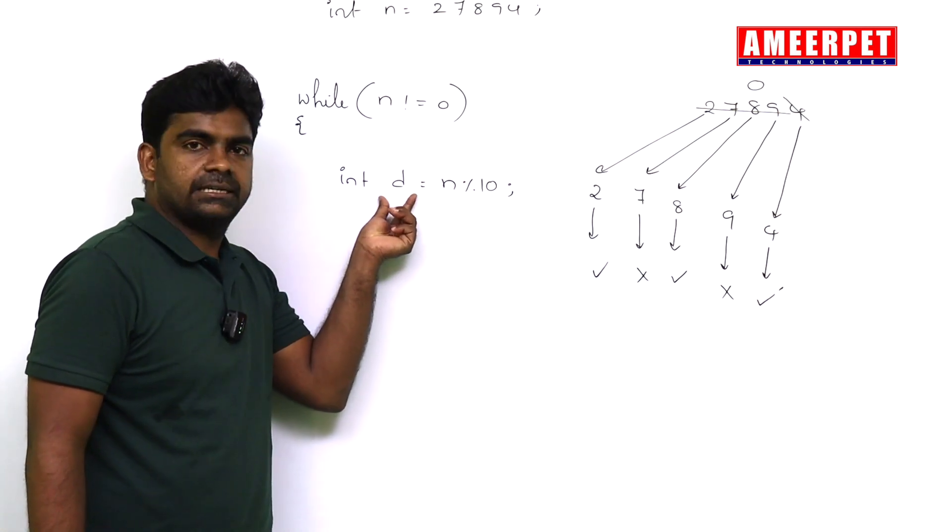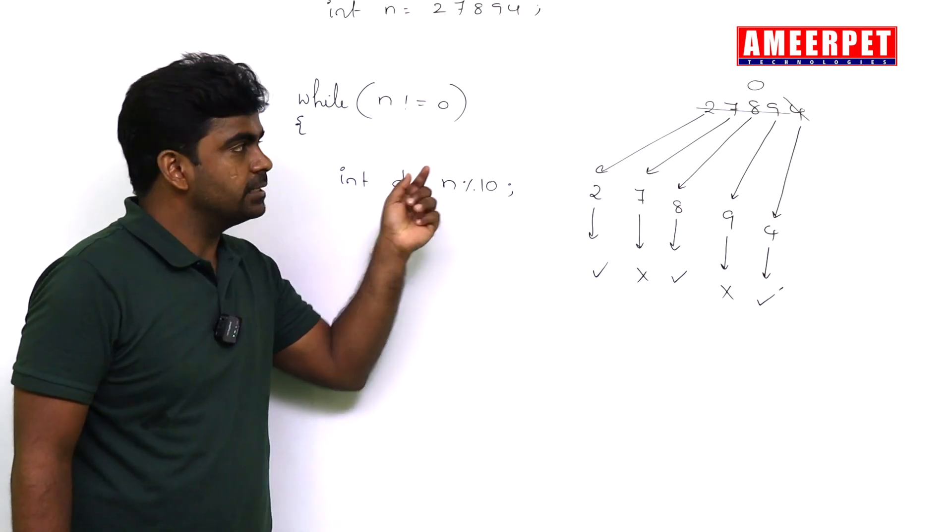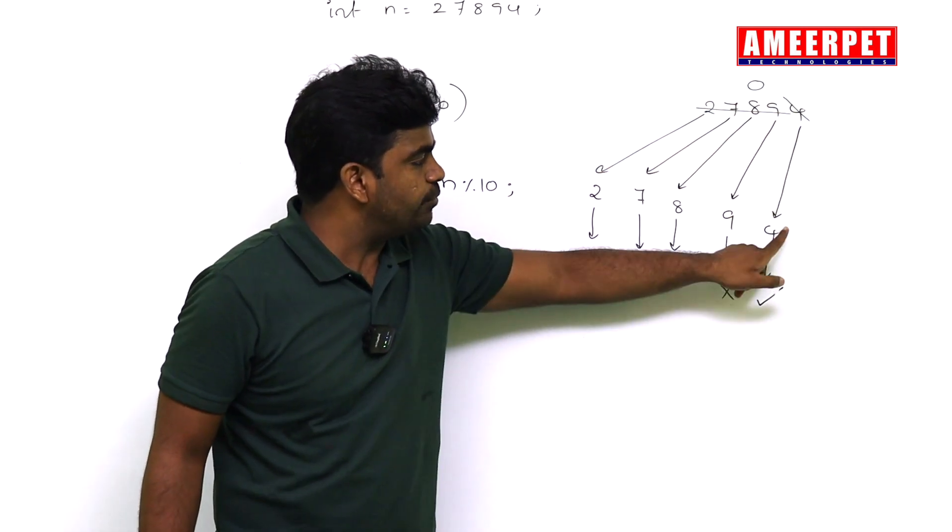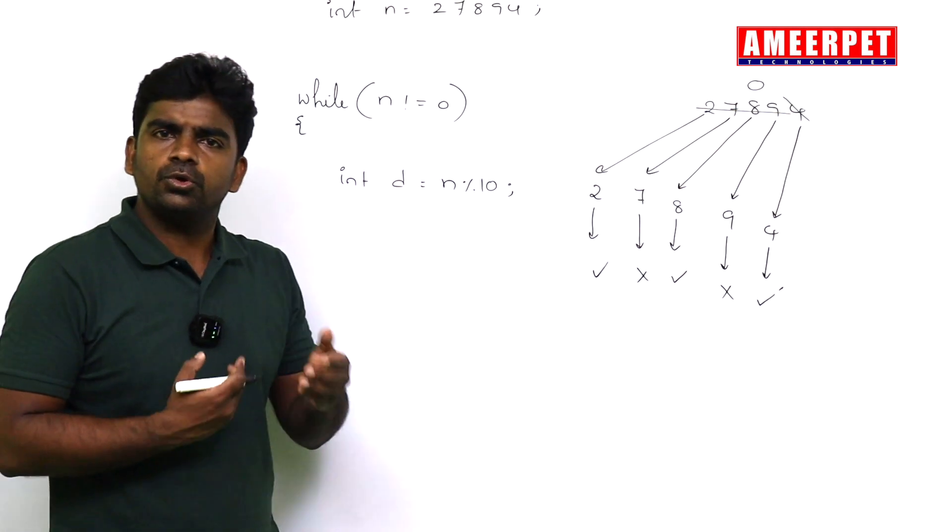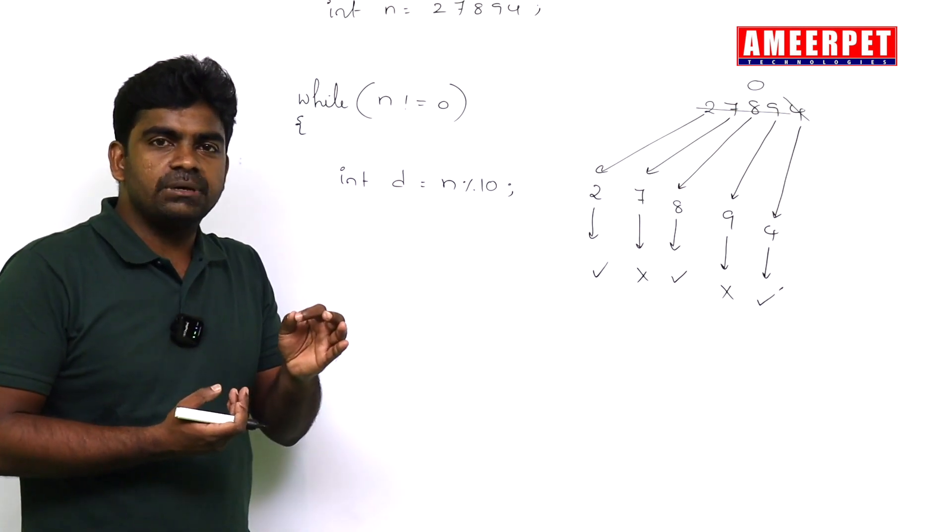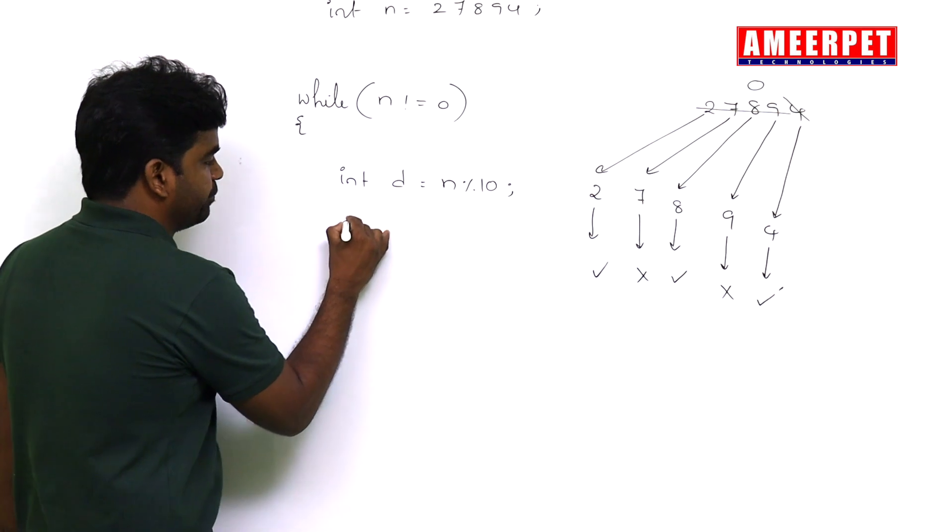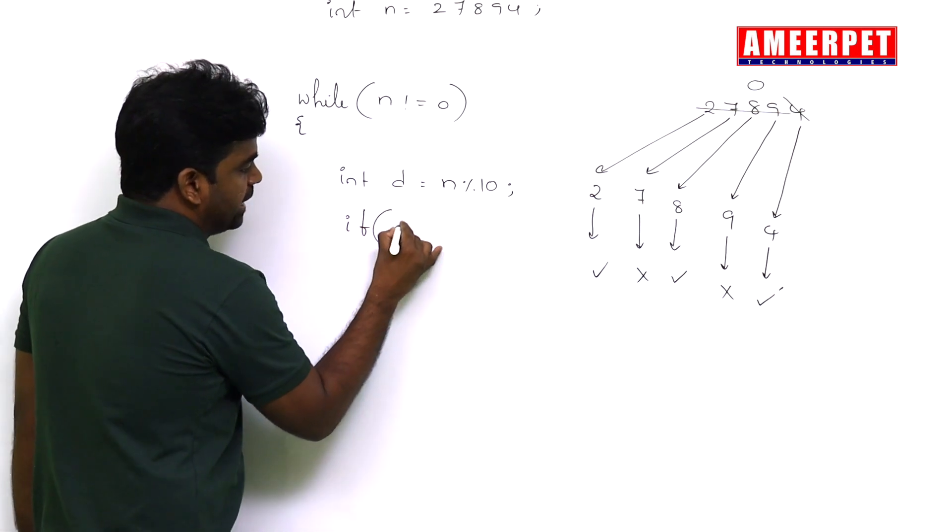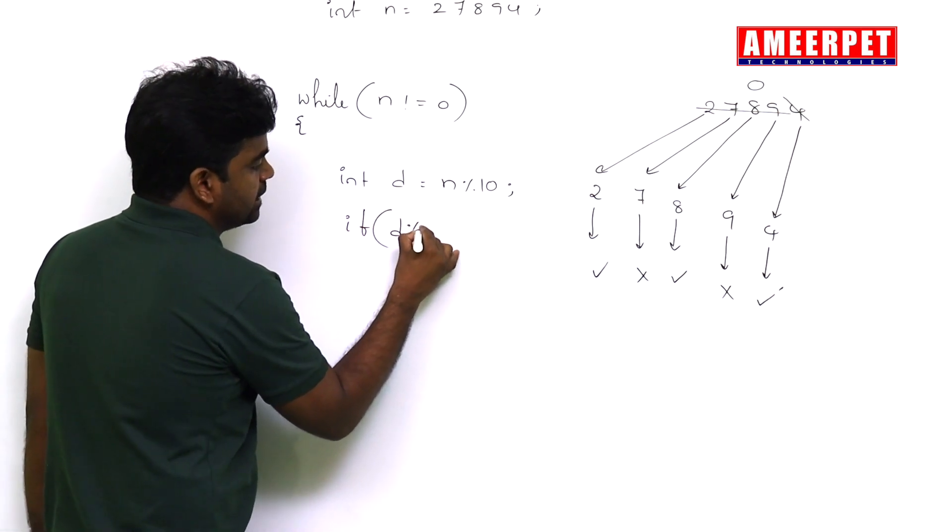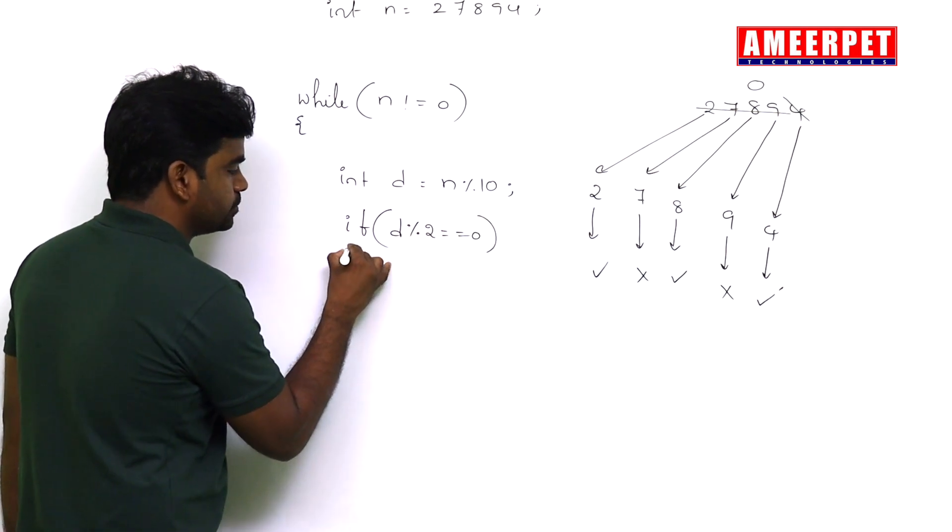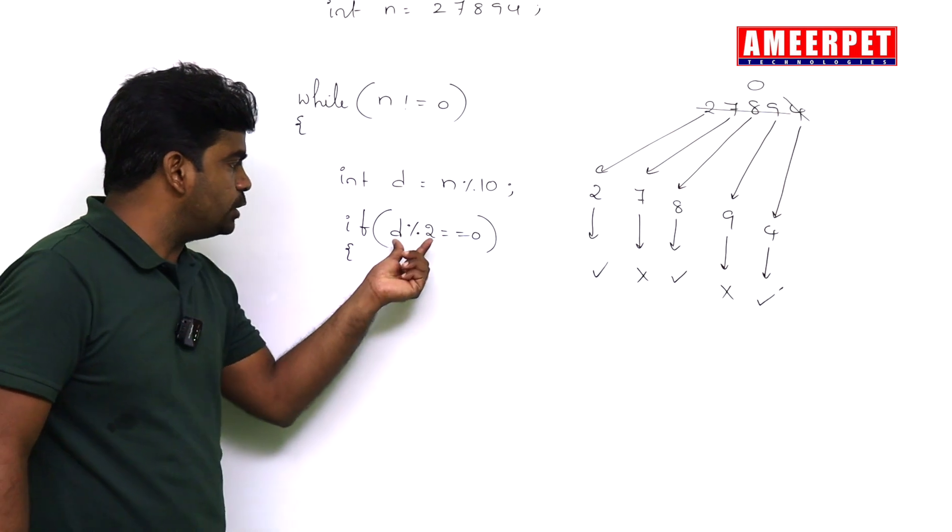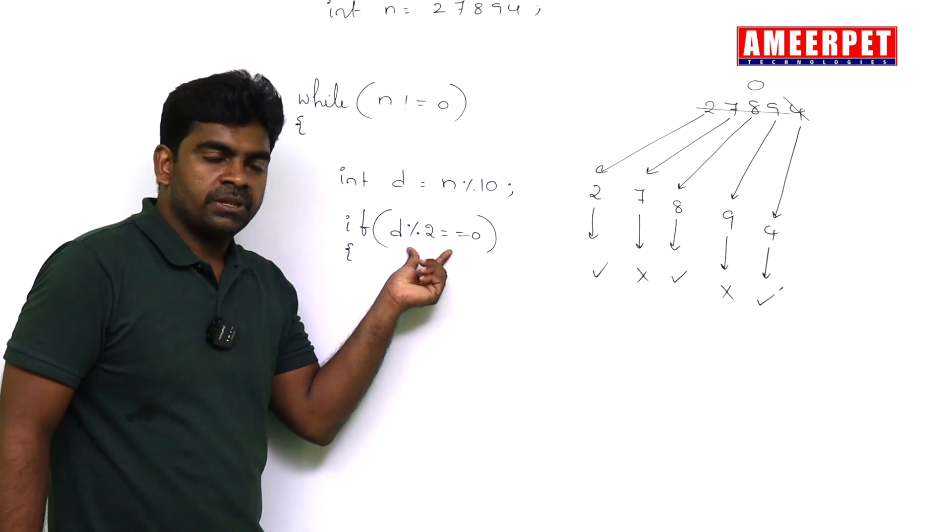you the last digit that will store into d. Suppose the last digit is 4. Now check if the digit is even or not. You know what is even: the number which is divisible by 2. If d mod 2 equals 0,